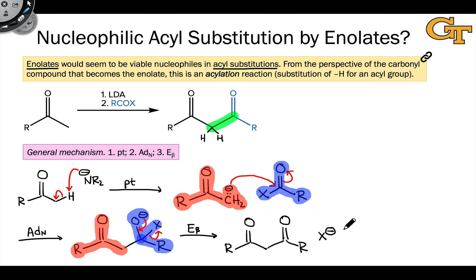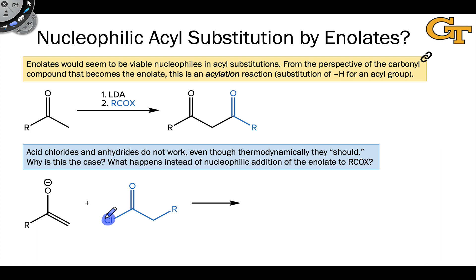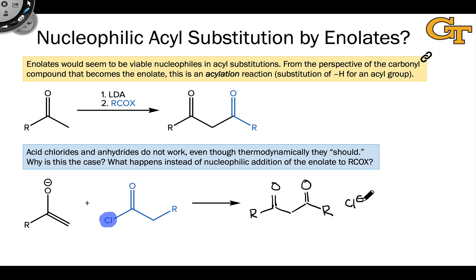Let's replace X with a concrete group to see how this works in practice. For example, consider an acyl chloride, in which the atom serving as the leaving group is chlorine. This looks like it should work great because on the product side we have the neutral beta-dicarbonyl compound and a chloride anion. Cl minus is far more stable than the enolate on the left-hand side, so the product side appears thermodynamically favored — and thermodynamically, that's true. The issue is not that this is thermodynamically unfavored; the problem is that kinetically something else occurs instead, which is also strongly thermodynamically favored.